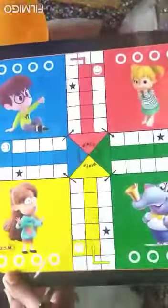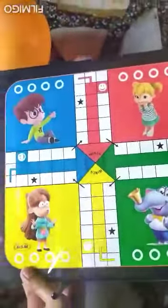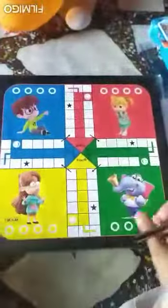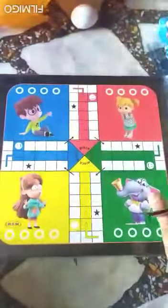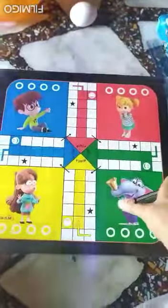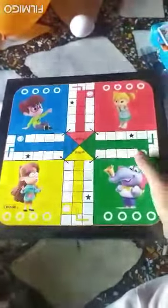Here comes the Ludo. What is this? Ludo. What is the shape of the Ludo? Come on, tell me. What is the shape of Ludo? Square. My shape is square. My shape is square. Square.